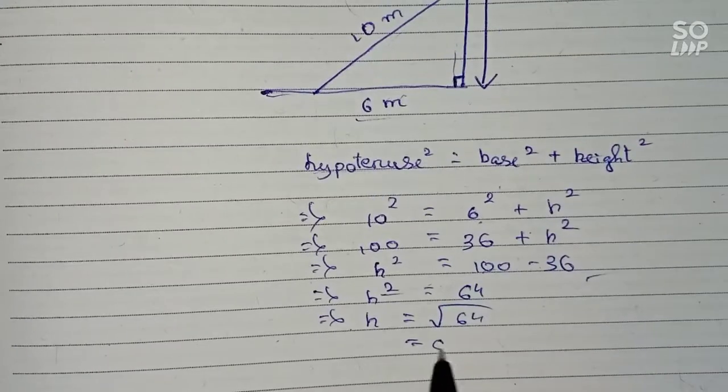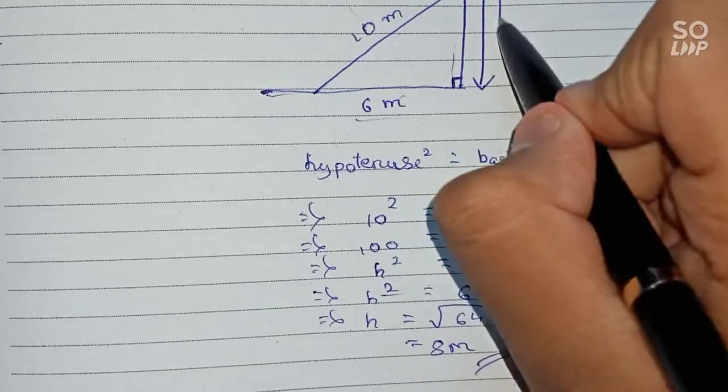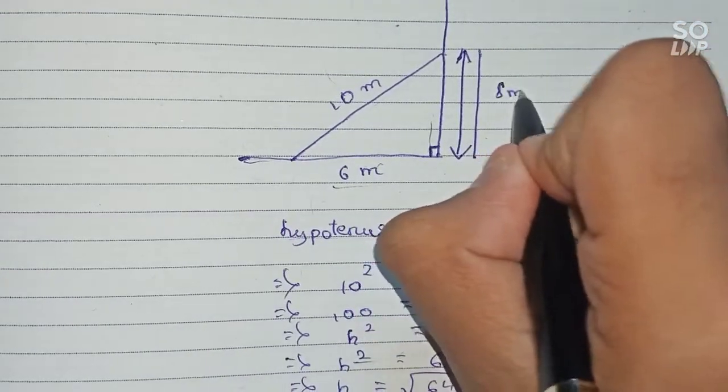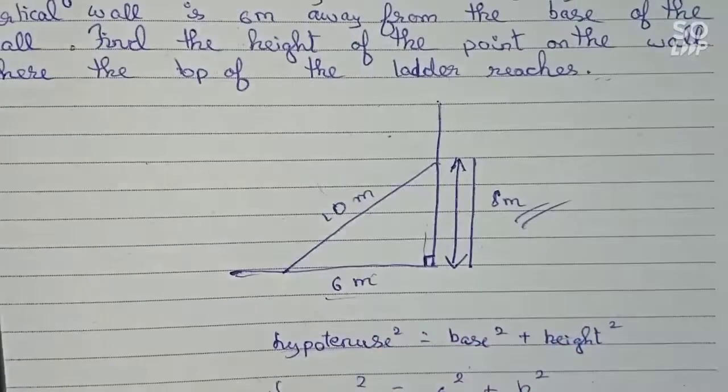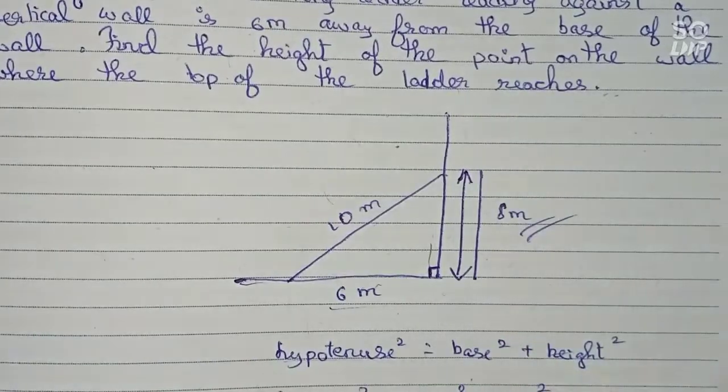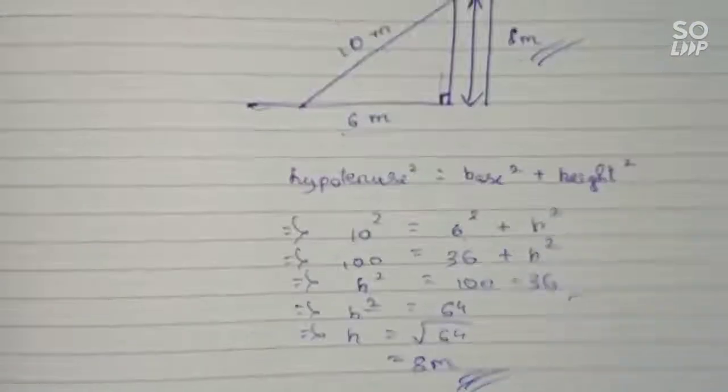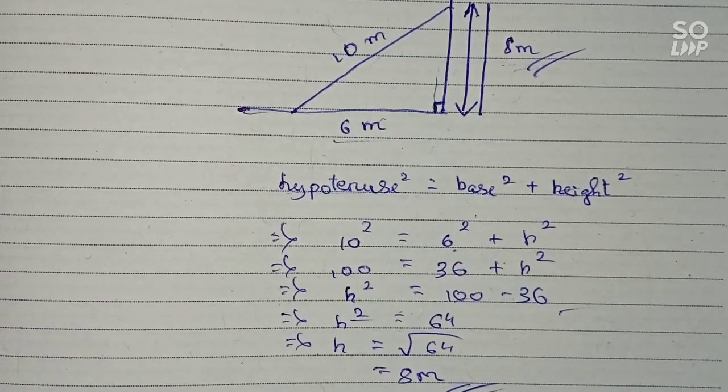So therefore this is the height of the wall and this measurement is 8 meters. The question asks for the height of the point on the wall where the top of the ladder reaches, so the answer will be 8 meters. So this is the final answer for this question. Thanks for watching this video and please subscribe to my channel for more solutions like this.